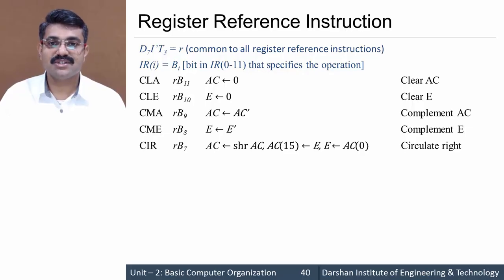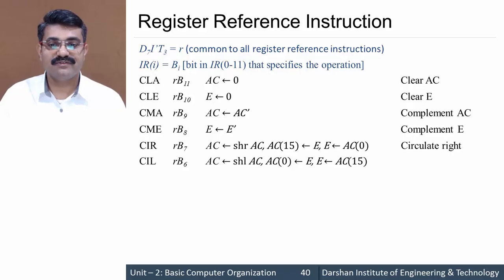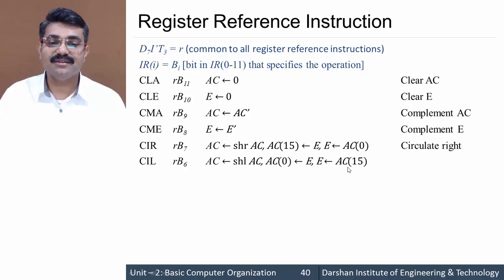Similarly, the next instruction is CIL — circulate left — which happens at r·b6. AC equals shift-left AC, and along with that the E bit is transferred to AC[0], and the 15th bit of the accumulator is copied to E. This is circulate left of AC and E.